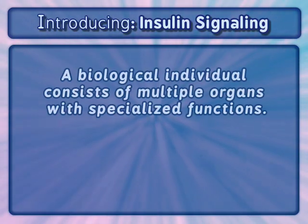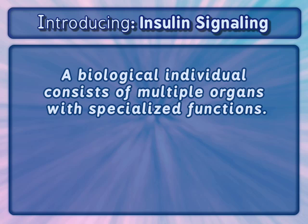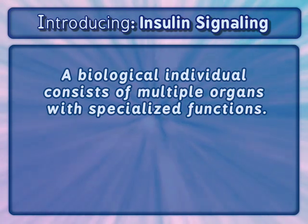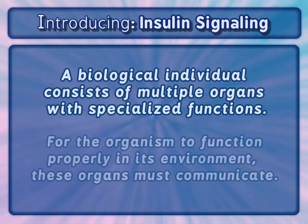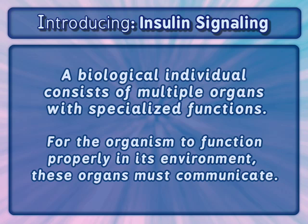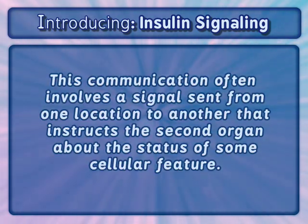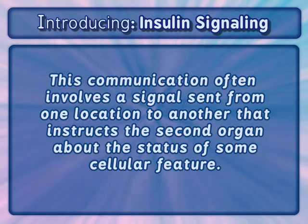A biological individual consists of multiple organs with specialized functions. For the organism to function properly in its environment, these organs must communicate. This communication often involves a signal sent from one location to another that instructs the second organ about the status of some cellular feature.